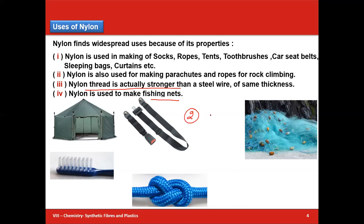Remember: if a question is asked from this chapter, you are expected to write either two uses or two properties. Some key uses of nylon: ropes, toothbrushes, car seat belts, parachutes, and fishing nets. Its thread is stronger than a steel wire.